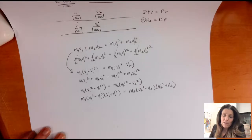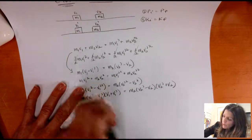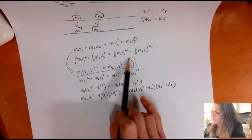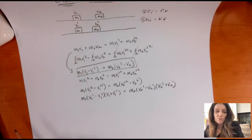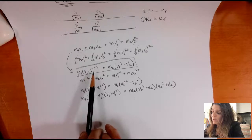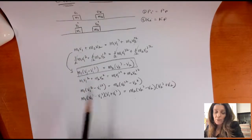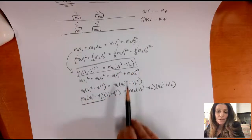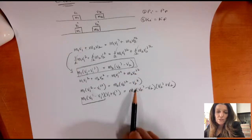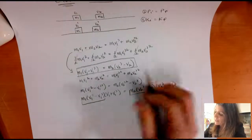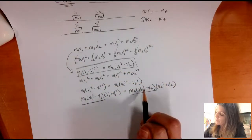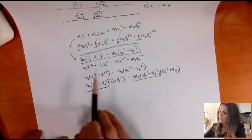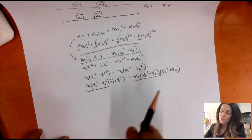You might ask: why factor it out? Well, let's come back to the momentum conservation equation grouped by mass. Notice that M1 times (V1 minus V1 prime) appears in both equations, and M2 times (V2 prime minus V2) appears in both as well. Since these equal each other, I can just cancel those common factors out. And look at what I'm left with — I went from this messy quadratic equation to a beautifully simple linear equation.